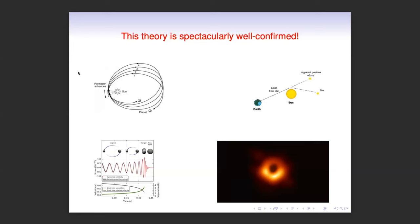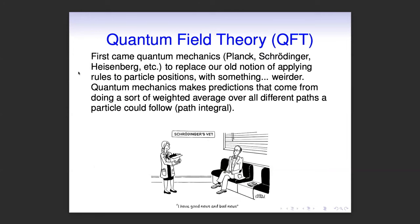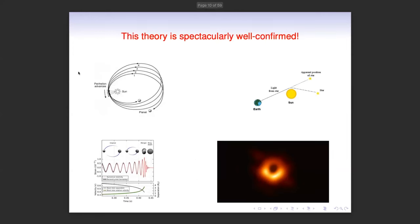General relativity is a great theory — spectacularly well-confirmed. The perihelion precession of Mercury was done early on, and there was the famous observation of light bending around the sun during a total eclipse, done in Einstein's lifetime. More recently, LIGO measured the infalling collapse of a black hole merger. There was the exciting picture of the black hole at the center of the galaxy. All of these fit perfectly with Einstein's theory of general relativity. And notably, nowhere in there has h-bar made an appearance.